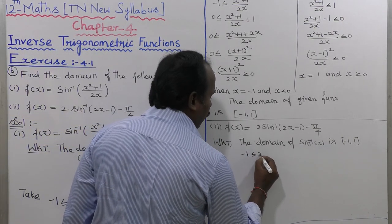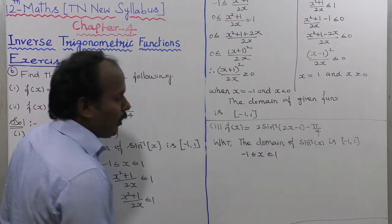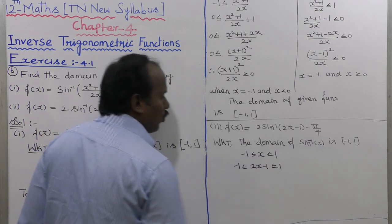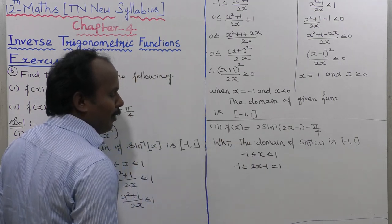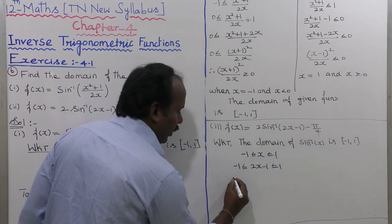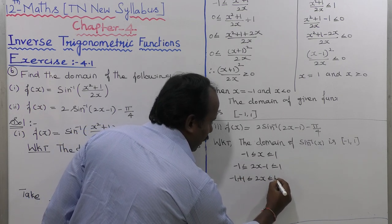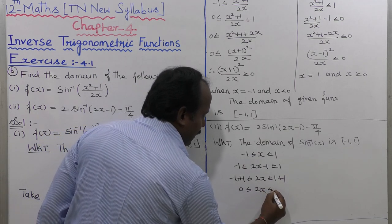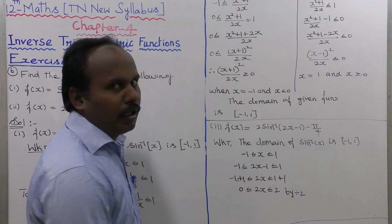So minus 1 less than or equal to x less than or equal to 1. With x replaced by 2x minus 1: minus 1 less than or equal to 2x minus 1 less than or equal to 1. Moving minus 1 to the right side: 0 less than or equal to 2x less than or equal to 2.